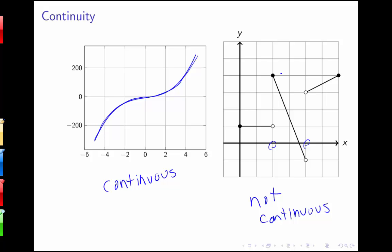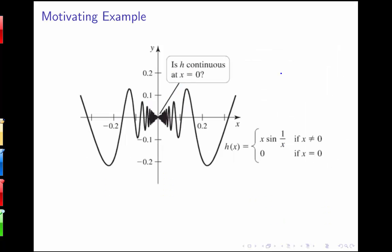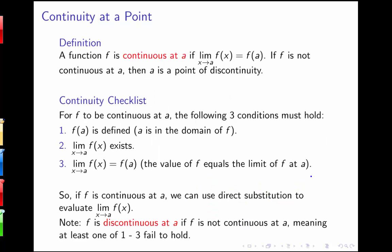Let's look at an example that illustrates why we need a more precise definition. Here I've got a piecewise function where h of x equals x sin(1/x) if x is not 0, and 0 if x equals 0. Just looking at the picture I can't tell if the function is continuous at 0, so we need a precise definition. The definition relies on limits: f is continuous at a if the limit as x goes to a of f(x) equals f(a).